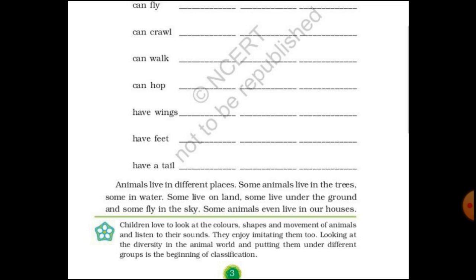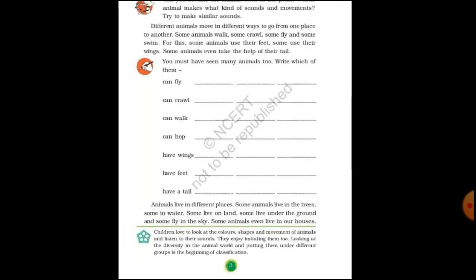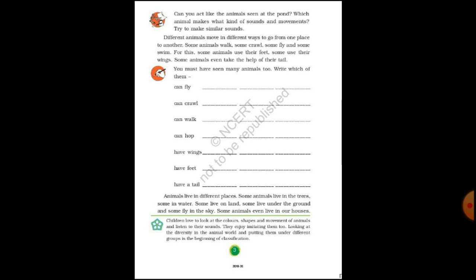Animals live in different places. Some animals live in trees, some in water, some live on land, some live under the ground, and some fly in the sky. Some animals even live in our houses — such as pet animals and domestic animals. We keep domestic animals for our benefit, like for milk, eggs, and other purposes.